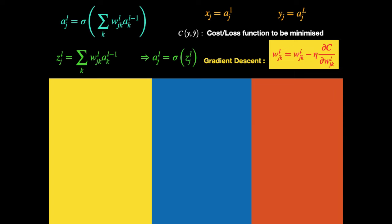To briefly recap: we have an ANN of any size, each node's output is denoted A superscript L subscript J, given by sigma of a weighted sum of previous layer outputs. To simplify the formula, we denote the quantity inside the brackets as Z superscript L subscript J — that is just the summation over the weight values and outputs of the previous layer nodes. So A superscript L subscript J is simply sigma of Z superscript L subscript J. We have a cost function C which we want to minimize.